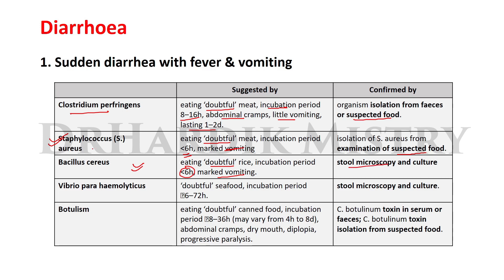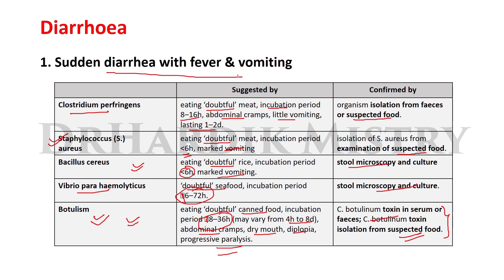Vibrio parahaemolyticus is suggested by eating doubtful seafood, incubation period 16–72 hours, confirmed by stool microscopy and culture. Botulism is suggested by eating doubtful canned food, incubation period 18–36 hours (ranging from 4 hours to 8 days), associated with abdominal cramps, dry mouth, diplopia, and progressive paralysis, confirmed by Clostridium botulinum toxin in serum or feces and isolation from suspected food.